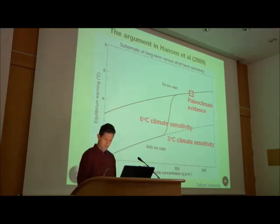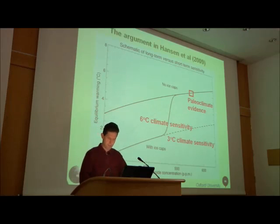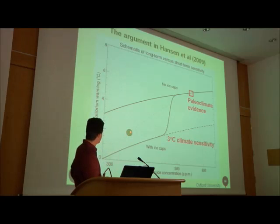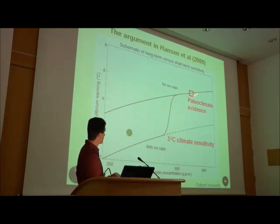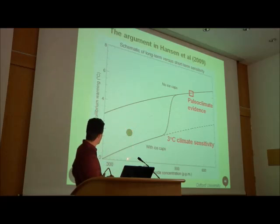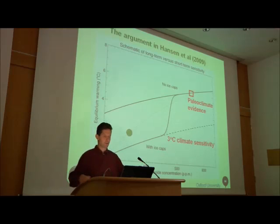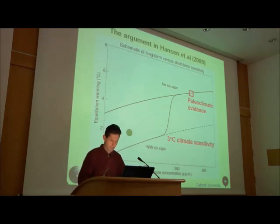So the climate sensitivity must be 6 degrees. Mark Lynas is a very intelligent person — he told me so yesterday at lunchtime. Following this line — which is just a log curve — there you are: 350 ppm, 2 degrees. Hey presto, that's why we need to aim for 350 ppm, because Jim Hansen has shown paleoclimatic evidence that climate sensitivity is really 6 degrees.